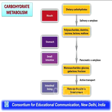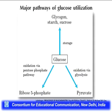Glucose present in our cells has three major fates: first, it can form glycogen as a storage material when present in high quantity; second, it can undergo complete oxidation via glycolysis and the citric acid cycle forming pyruvate; or third, it can form ribose 5-phosphate, essentially required for nucleotide synthesis, by a pathway called the pentose phosphate pathway.